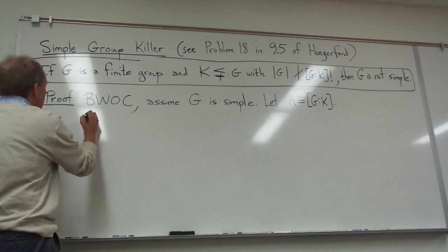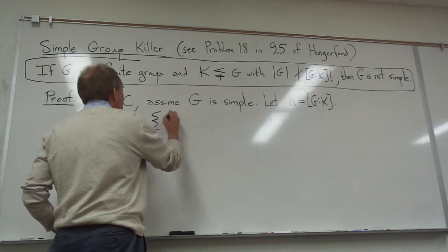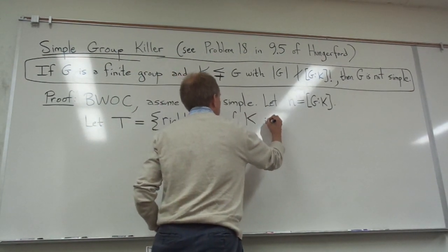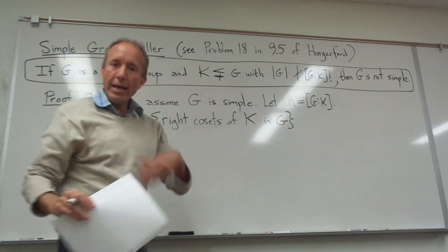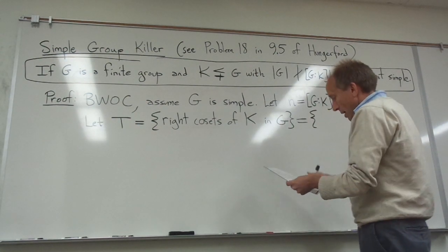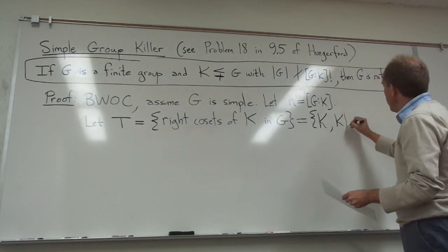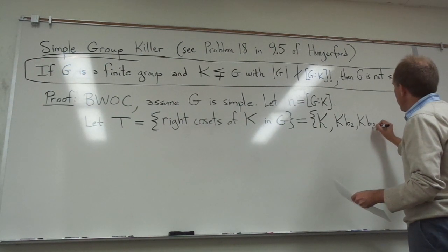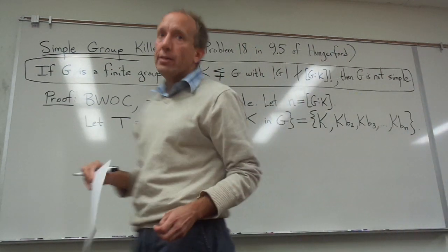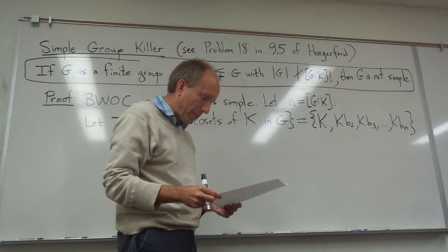As another piece of notation, I'm going to define capital T to be the set of right cosets of K in G. I'm going to make a collection out of those right cosets. We know there will be N of them. Let me give them names: K itself, which is like the identity coset, and then KB₂, KB₃, dot dot dot, up to KBₙ. So we have N right cosets of K in G, and this is a set of size N, capital T.